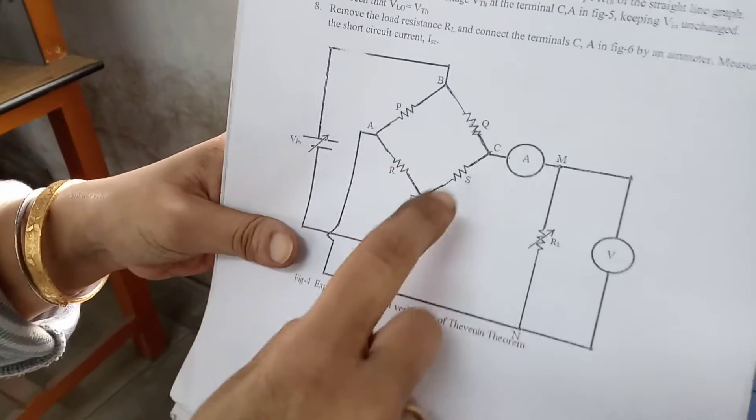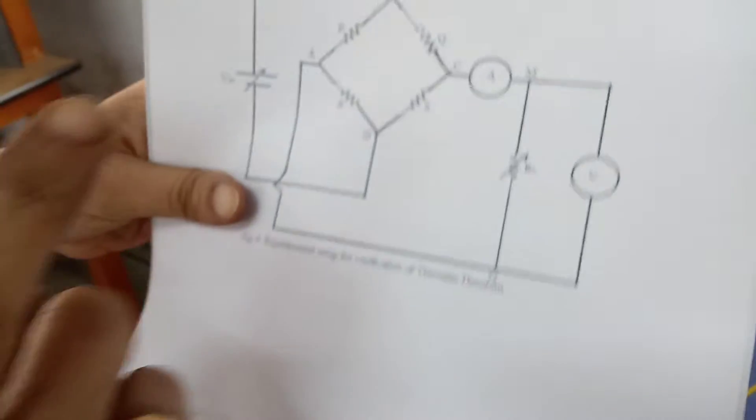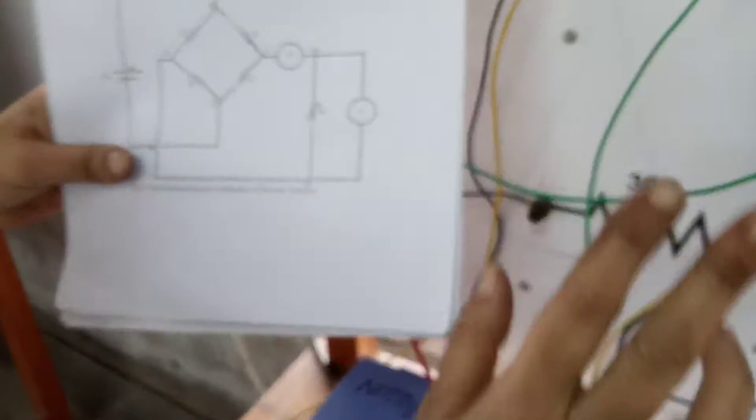It's like a bridge circuit. It is having four arms P, Q, R, S. Now let me show you what are the P, Q, R, S over here.